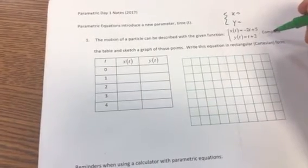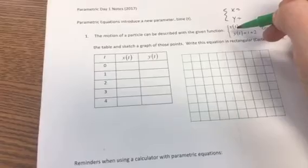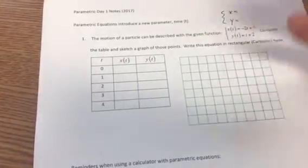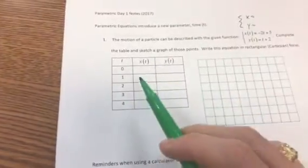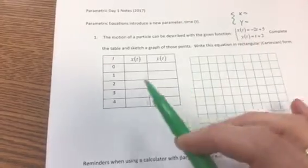So as we get started with this, typically we use a t. It doesn't have to be a t, but it is often talking about at a particular time. Where is your function at a given time? So what we're going to do is we're going to find the different x and y values at given times.